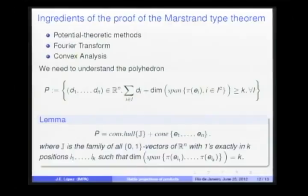The combinatorial nature of this lemma appears because the vertices of the polyhedron are closely related with how the projection acts over the Cantor spaces, the canonical Cantor spaces of ℝⁿ.